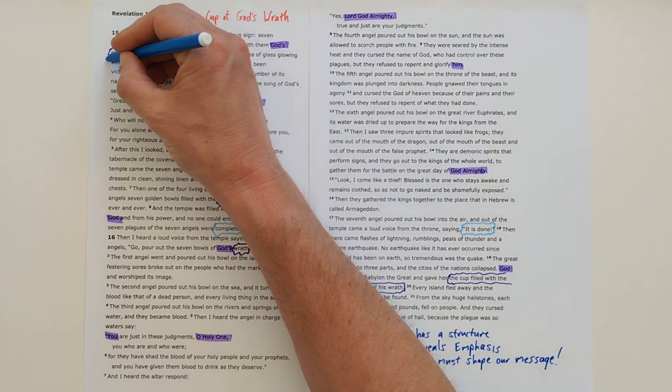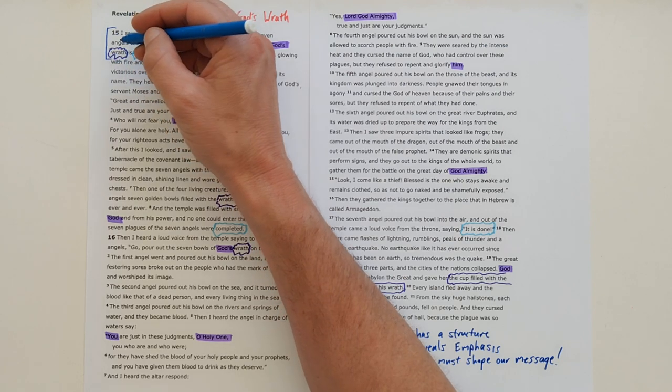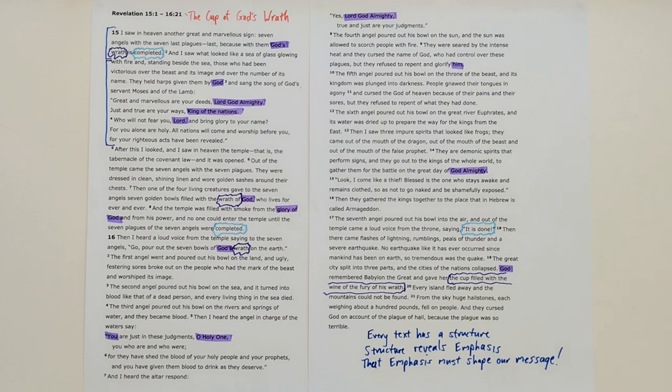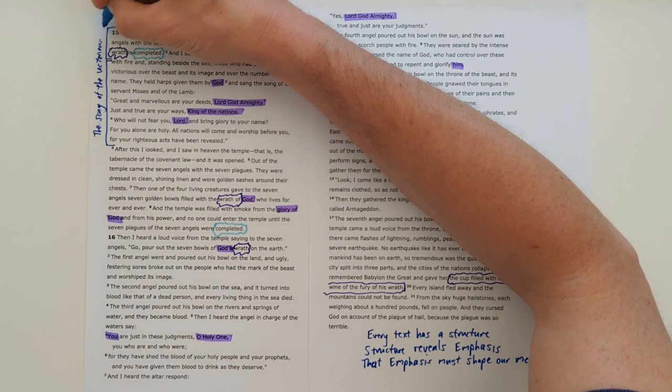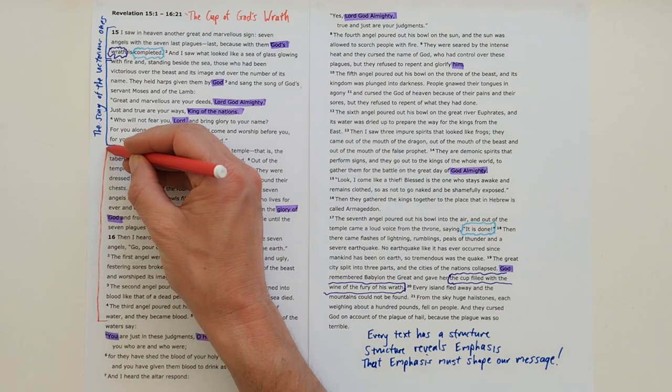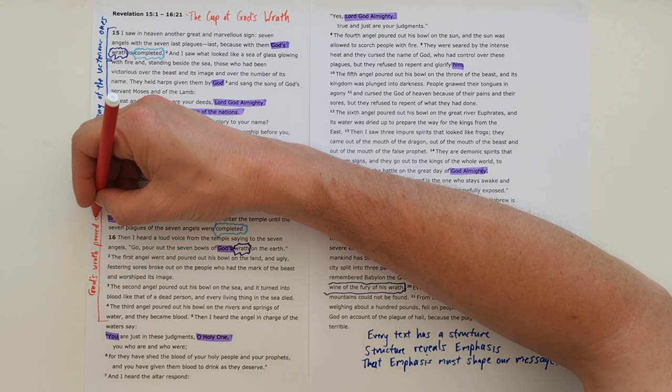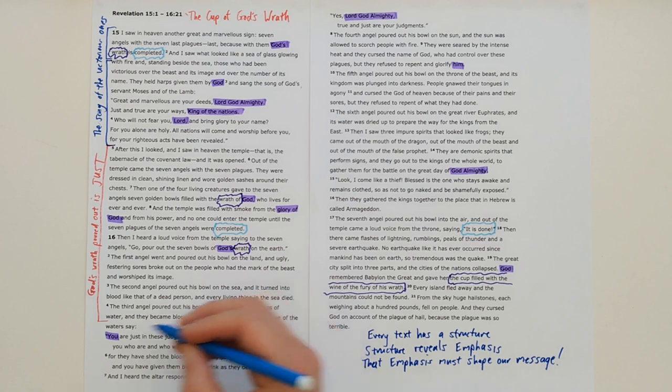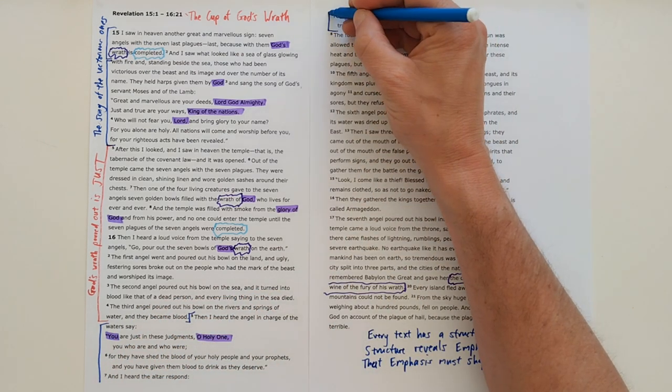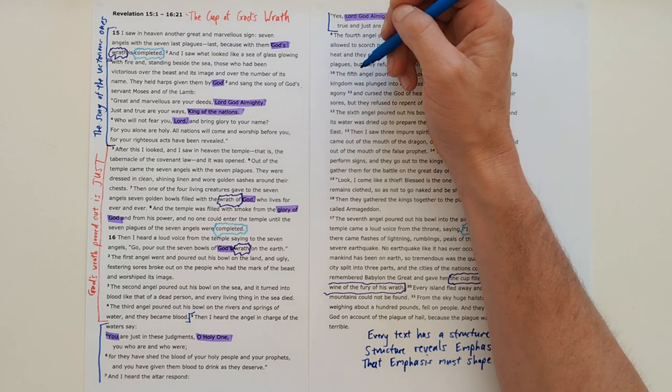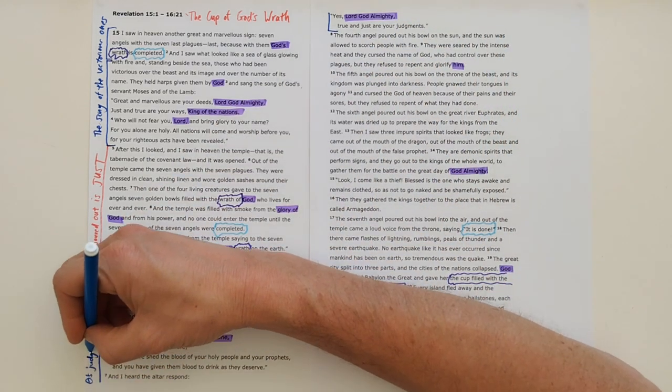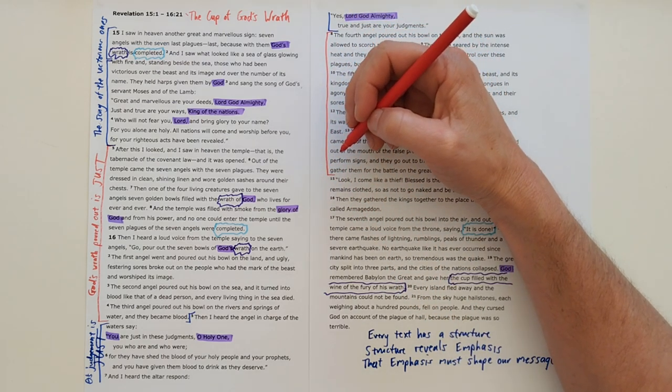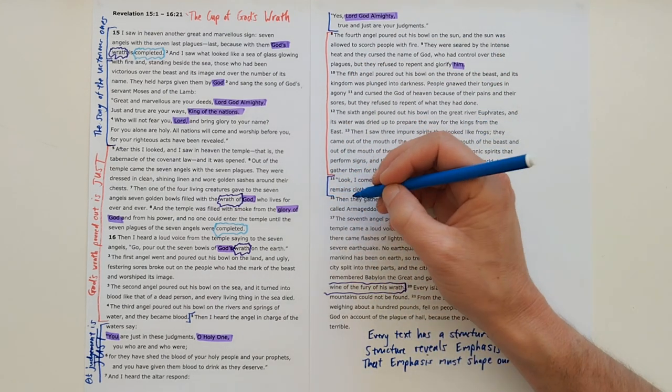So I'm just going to show how I think the structure of this section is working. We get an introductory verse, and then from verse 2 to 4 we hear the song of the victorious ones. And then we get the first of the pictures of God's wrath being poured out. That is just punishment from God. Then from verse 5 we hear another call, and this is just reinforcing the justice of God's judgment.